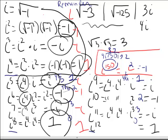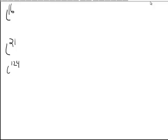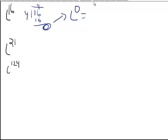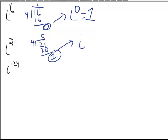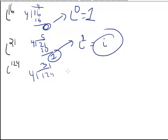Let's now practice some problems. Simplify i to the sixteenth, i to the twenty-first, and i to the 124. The rule is divide the exponent by four and look at the remainder. i to the sixteenth: 16 divided by 4 has remainder zero, so it equals i to the zero, which is one. i to the twenty-first: remainder one, so it equals i to the first, which is i. i to the 124: 124 divides evenly by four, remainder zero, so it equals one.